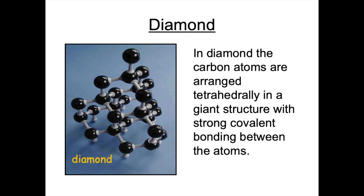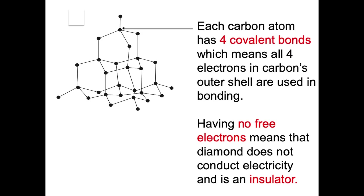Let's start by looking at diamond. Diamond has a giant covalent structure and the carbon atoms are arranged tetrahedrally in this structure. In diamond there are strong covalent bonds in all directions and this structure influences the properties that diamond has and also dictates the uses that diamond has as well. Looking at diamond in even more detail, you can see that each carbon atom has four covalent bonds.